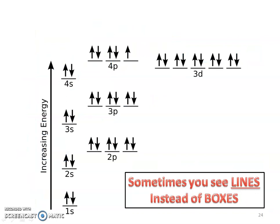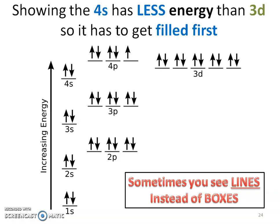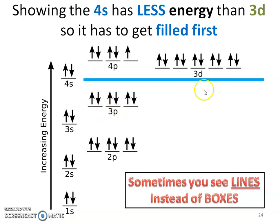You might also see lines instead of boxes — just a different representation of an orbital filling diagram, with lines and arrows. The key point is that 4S really has less energy than 3D. So even though 3P comes before 3D by number, the 4S has less energy and fills first, then the 3D, then the 4P. We have to fill according to energy, not just the numbered order.